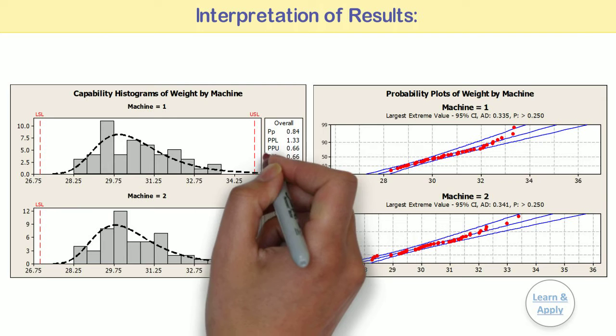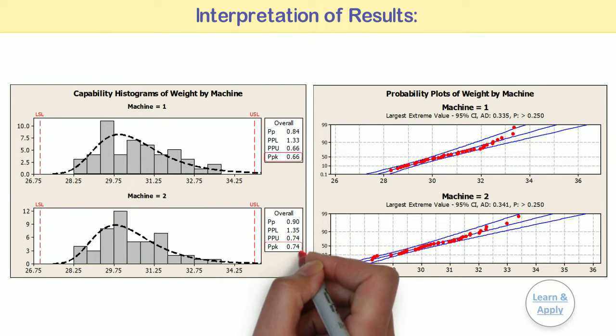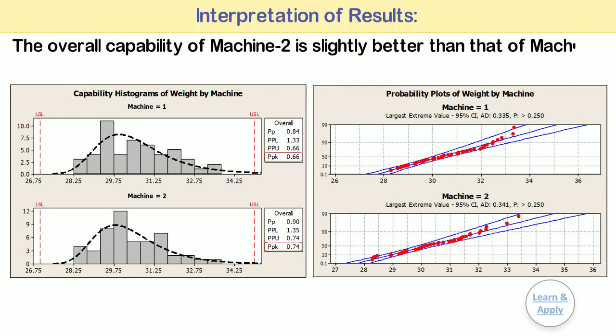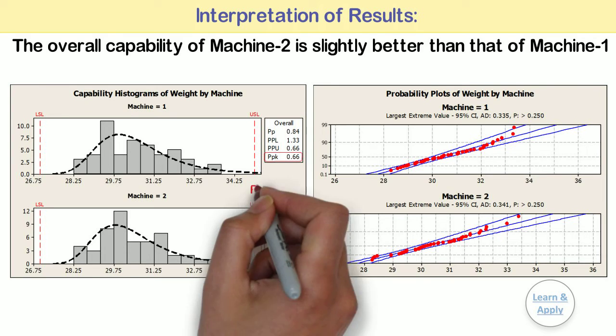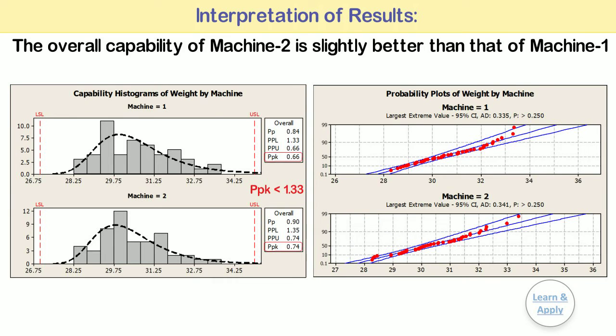Interpretation of results. The PPK is 0.66 for machine 1 and 0.74 for machine 2. Therefore, the overall capability of machine 2 is slightly better than that of machine 1. However, the capability indices for both machines are below 1.33, which is the generally accepted minimum value for a capable process.